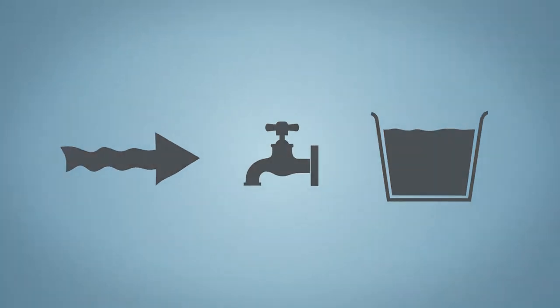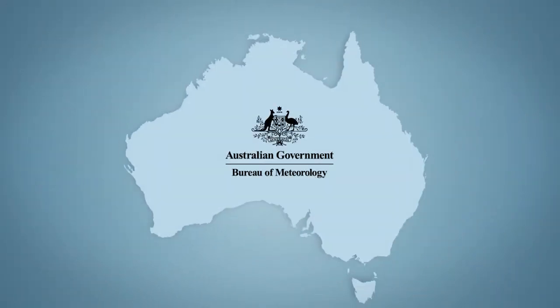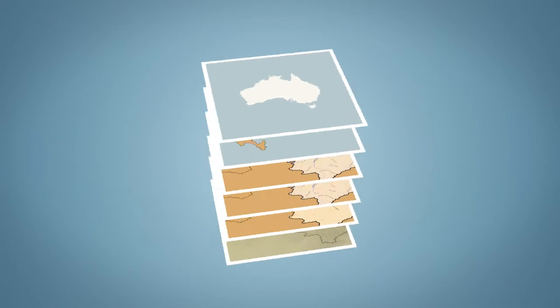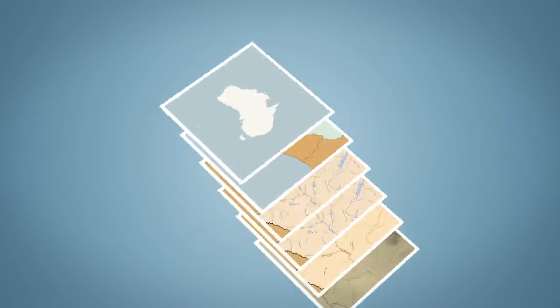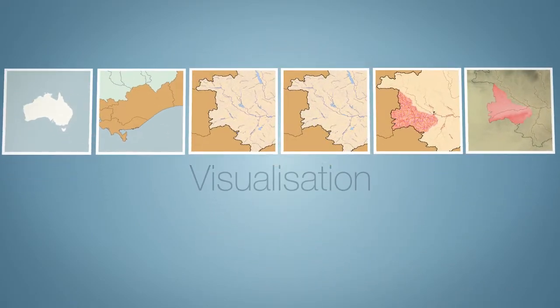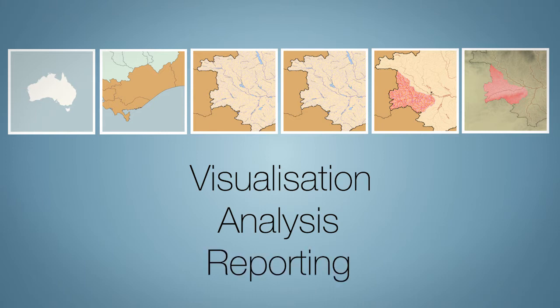It is an authoritative information source that works seamlessly across Australia. The Geofabric is made up of six data sets for use in hydrological visualisation, analysis and reporting.